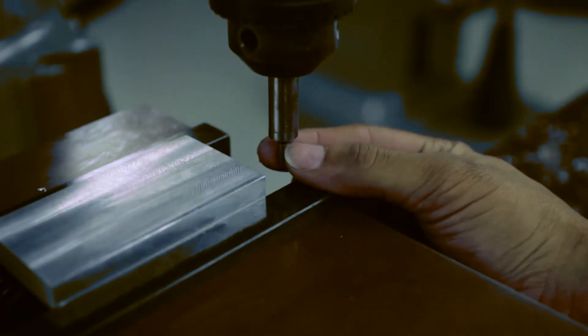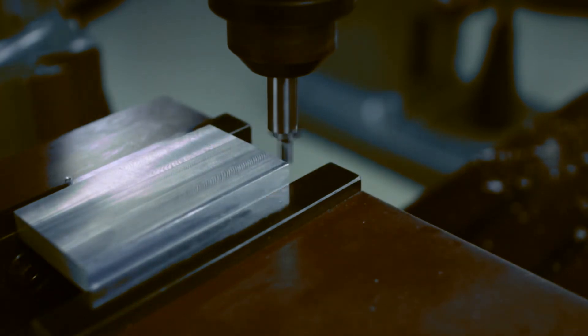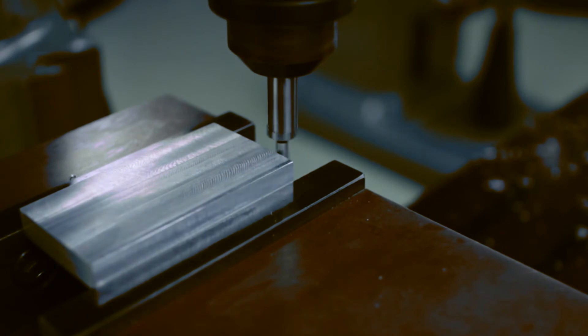To use an edge finder, make sure you offset the bottom part of it and turn on the spindle. Slowly bring the edge finder to the part until it becomes more and more concentric. Eventually it will kick out.